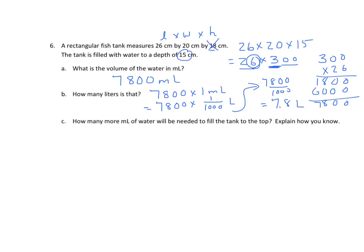How much more water to get to the top? Well, I know that I have it filled to 15, and I can fill it to 18, so I have 18 minus 15 equals 3 centimeters. So now I have 26 times 20 times 3, and that equals 26 times 60. I'll multiply 26 times 60, regroup my 3, and I get 1,560 more milliliters of water to fill that tank.